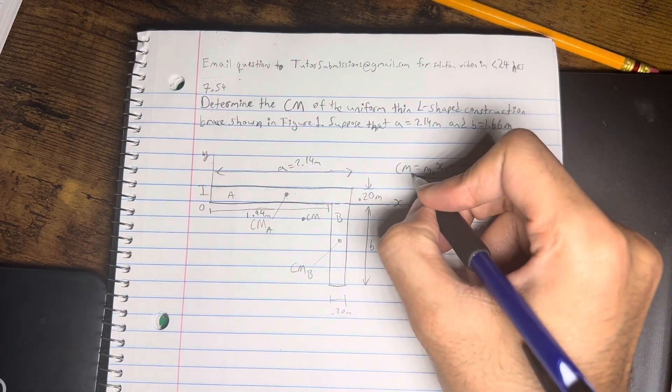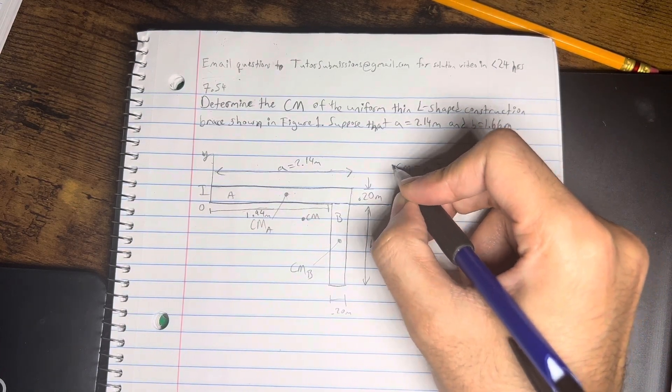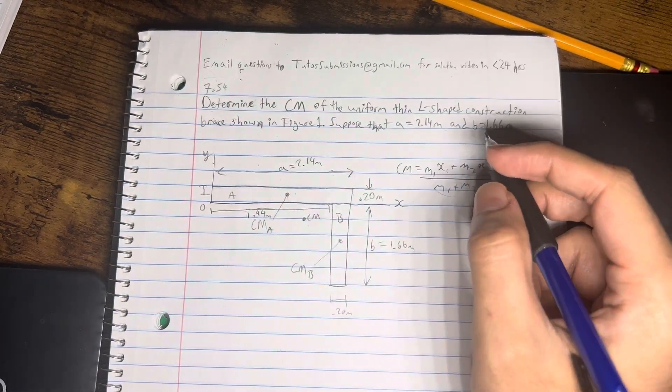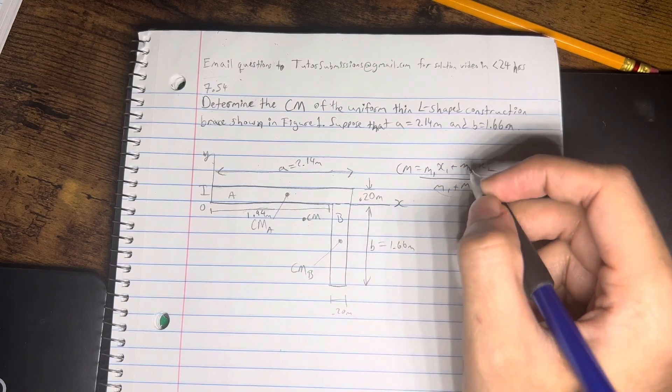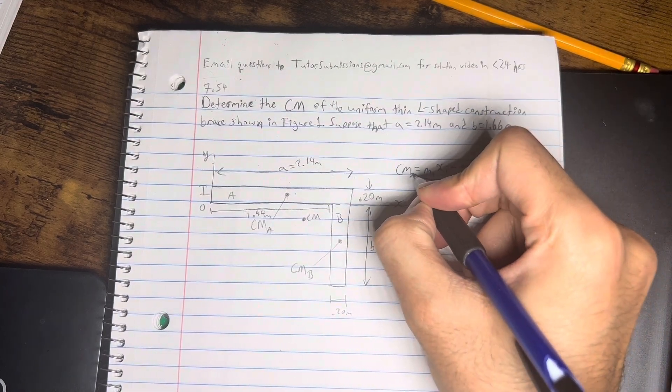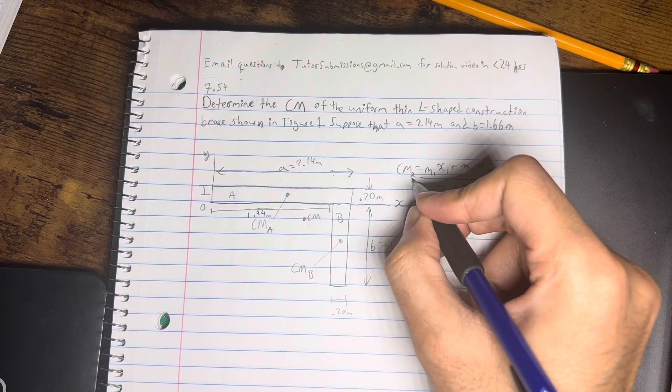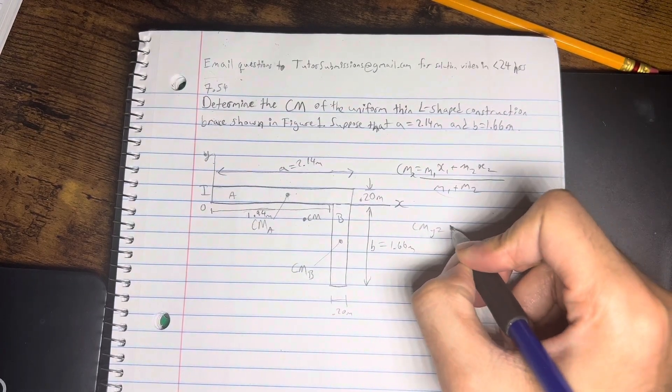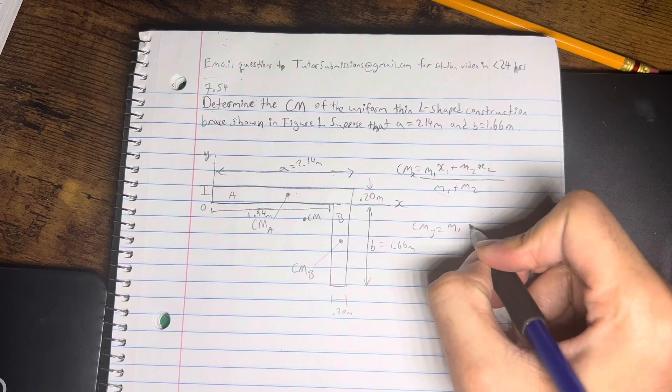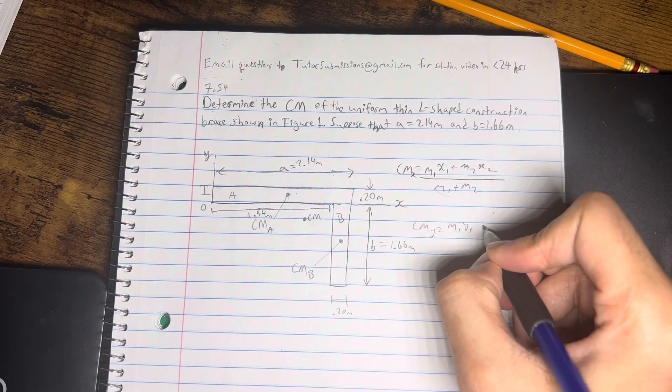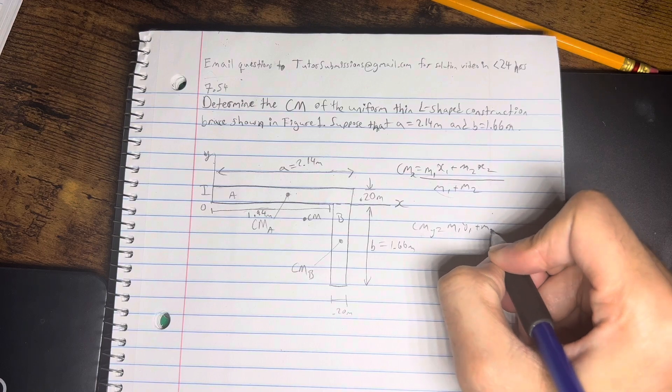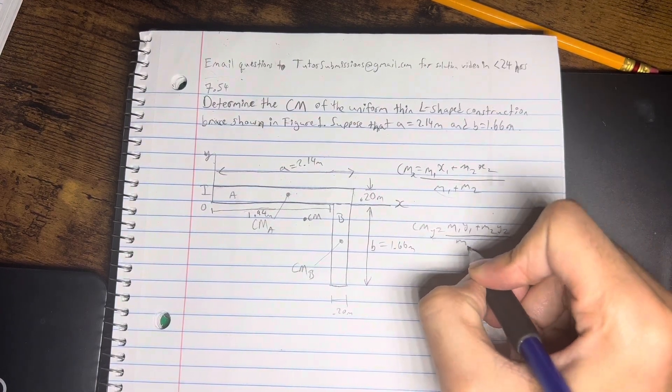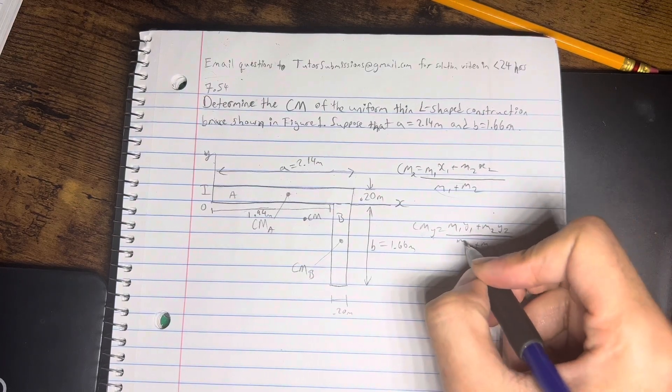Okay, so this is like the more general equation, but since they're asking us in the question to find the coordinates, x and y coordinates, we can divide these. So this is going to be CM with the x coordinate, and then for the y coordinate, it's going to be more or less the same equation, but instead of x1, it's going to be y1, and then instead of x2, it's going to be y2, and it's still going to be over the total mass.